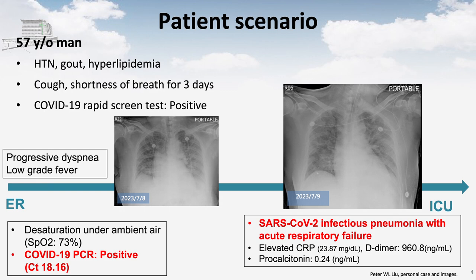It's a 57-year-old man with only hypertension and hyperlipidemia. He had symptoms of cough and shortness of breath. During the COVID-19 pandemic, we all know these typical symptoms. The patient did a COVID rapid test himself and the result was positive, but the symptom progressed and he went to our emergency department. The COVID PCR was also positive.